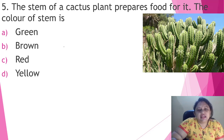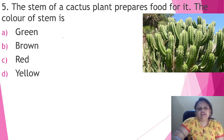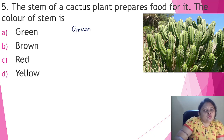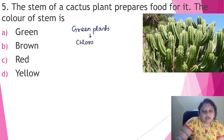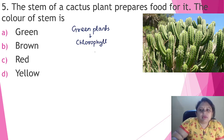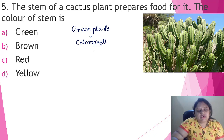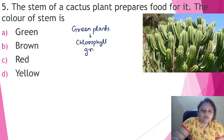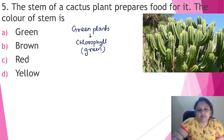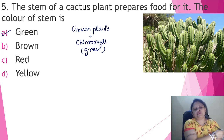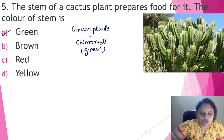Our next question: the stem of a cactus plant prepares food for it — what is the color of the stem? We know that only green plants prepare their own food because they contain a green pigment called chlorophyll, which is required for food preparation. If the cactus stem is preparing food, it must contain chlorophyll. Chlorophyll is responsible for the green color. So the color of the stem must be green, which is present in option A. Option A is the correct answer.